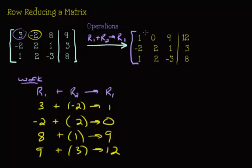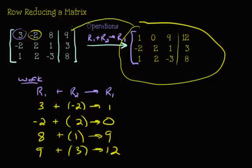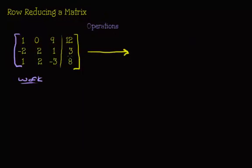Now I'm going to use this result as my new matrix and start the next set of operations. Our overall goal is to change the diagonal elements to ones and make everything below the diagonal into zeros. So my next goal is to make these two entries below the first pivot into zeros.